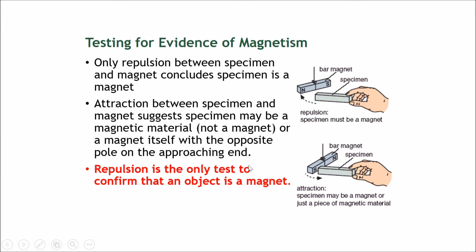Remember, repulsion is the only test to confirm that an object is a magnet. What if this specimen was not a magnet and not a magnetic material — for example, a block of wood, a non-magnetic material? If this was a block of wood, would the reaction be repulsion or attraction? The answer is neither. A non-magnetic material would not affect the magnet at all, so there would be no repulsion or attraction.